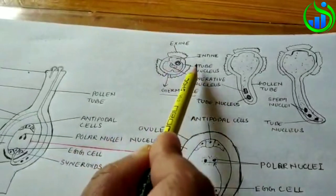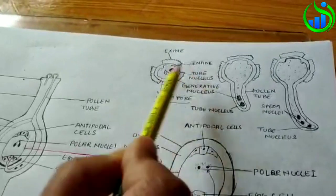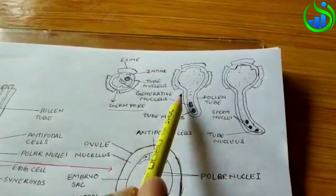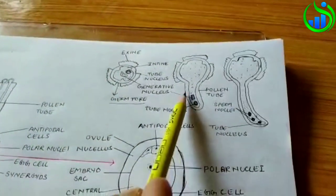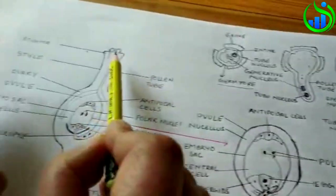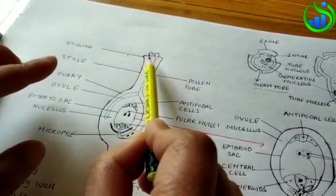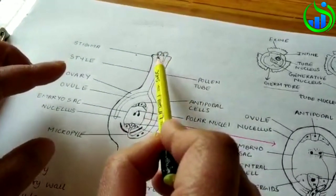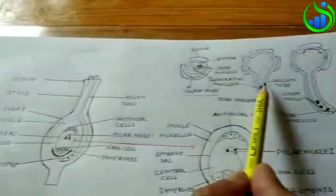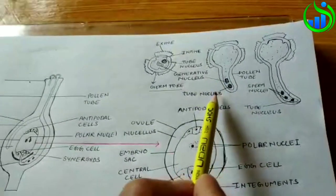We have the vegetative cell and then we have a nucleus. Then we have the pollen grain and the germination. The germination of the pollen is favorable and compatible.